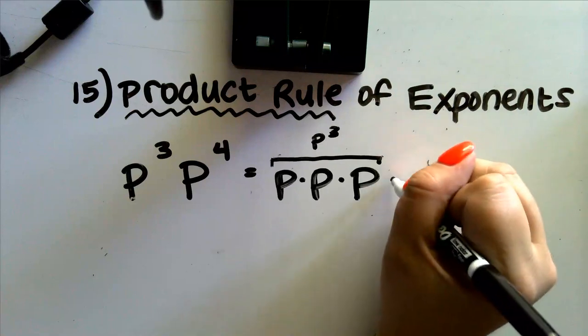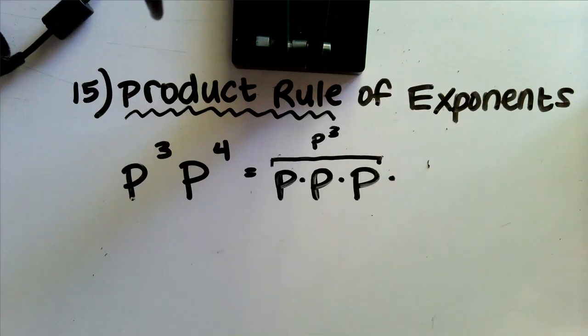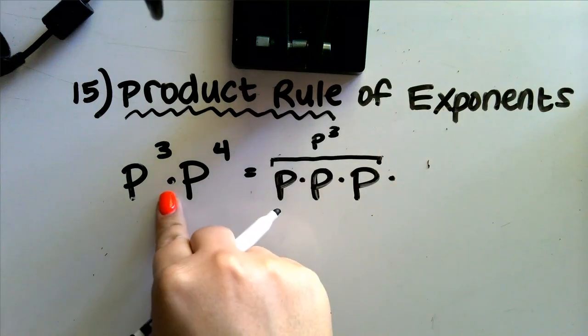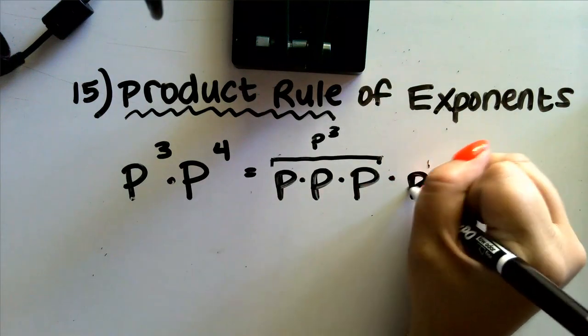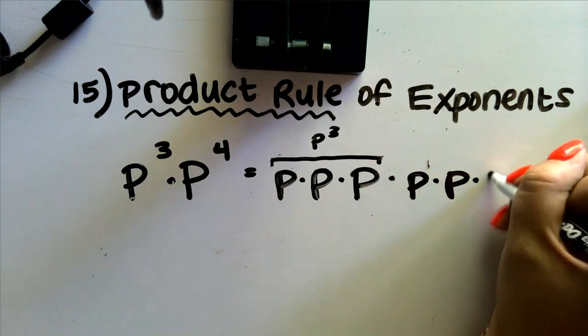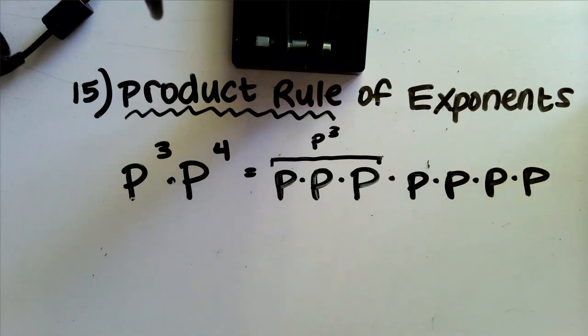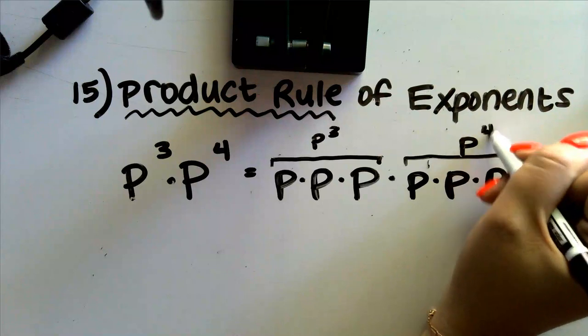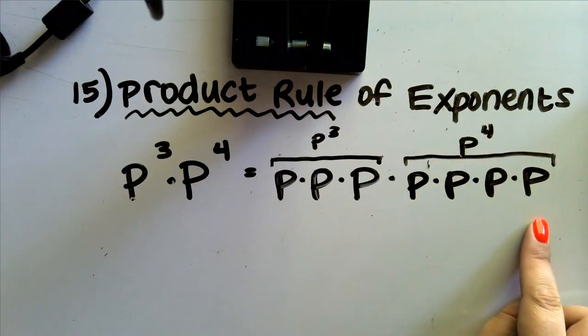Let's now expand p to the fourth. Remember I'm including that multiplication between our terms because there is a multiplication. But let's expand the second one: p times p times p times p. This whole guy right here is p to the fourth. Four p's.